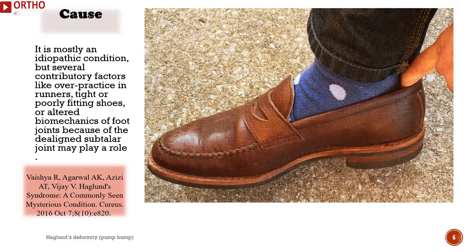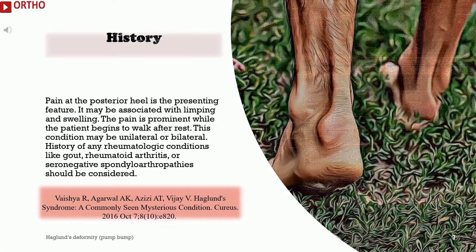It is mostly an idiopathic condition, but several contributory factors like over-practice in runners, tight or poorly fitting shoes, or altered biomechanics of foot joints because of a de-aligned subtalar joint may play a role. Pain at the posterior heel is the presenting feature. It may be associated with limping and swelling. The pain is prominent while the patient begins to walk after rest. History of any rheumatologic conditions like gout, rheumatoid arthritis, or seronegative spondyloarthropathies should be considered.